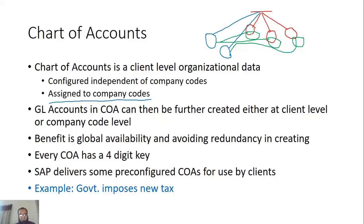The chart of accounts is the same structure, but the general ledgers are separate because each company has its own profits, losses, expenses, assets, and liabilities. The chart of accounts contains only account numbers and account names — no transaction data — whereas the general ledger contains the actual numbers. The benefit of a centralized chart of accounts is that we do not need to create a new chart of accounts every time a new company is created. If companies are similar, we can assign the same chart of accounts.